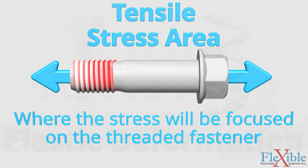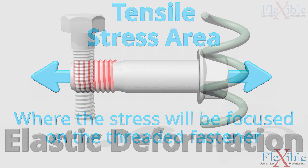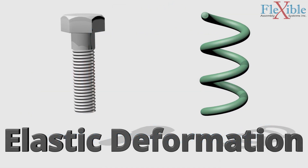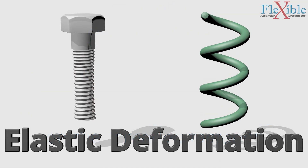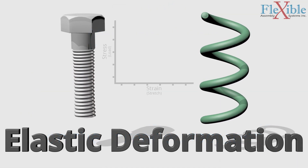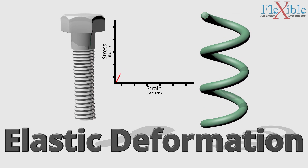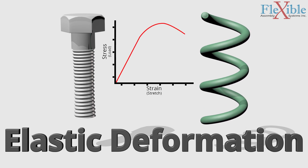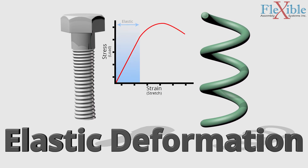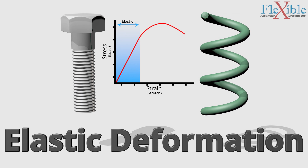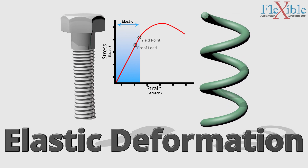When stress, tension, or load is applied to a fastener it will strain, stretch, or elongate like a spring. If the fastener returns to its original shape then its deformation was elastic. Any deformation beyond its yield point will be permanent.